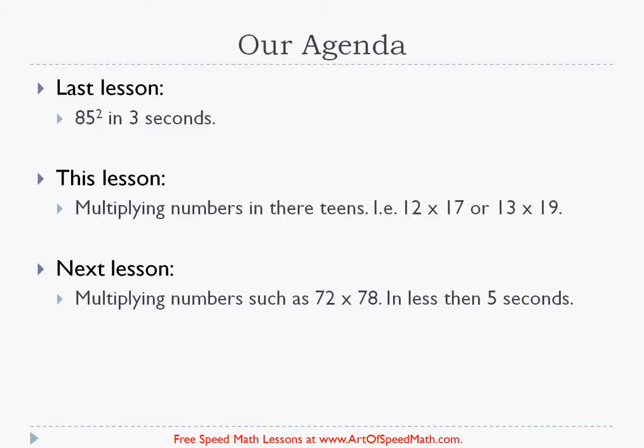So last lesson we looked at how to square numbers that are double digit and we looked at how we could possibly do that in under three seconds. For example we covered the 85 squared example. You could literally do this in three seconds and when I say three seconds I mean that is actually quite generous with the time. So if you want to learn how to do that go back to our last lesson.